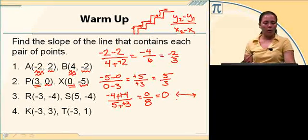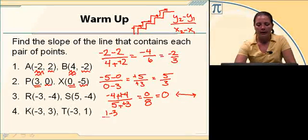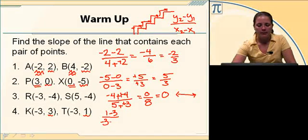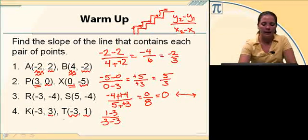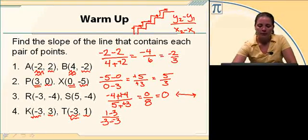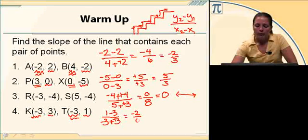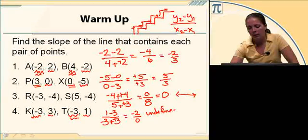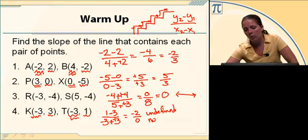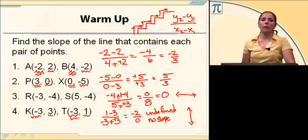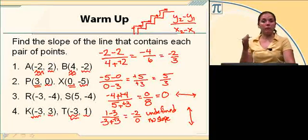The last one, number 4, I've got the points negative 3, 3 and negative 3, 1. So I'm going to take 1 minus 3 — that's my Y minus the Y — over X minus X, which is negative 3 minus negative 3. This gives me negative 2 over 0. Anything over 0 is undefined — you can't divide by 0 — so it's an undefined slope, or there's no slope. Lines that have no slope are vertical lines.